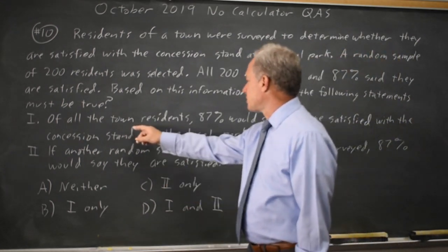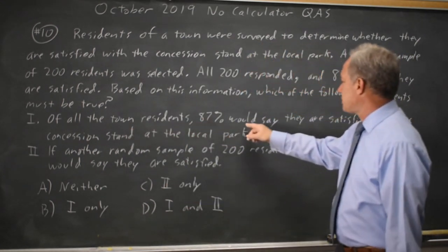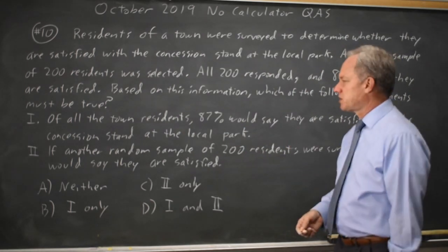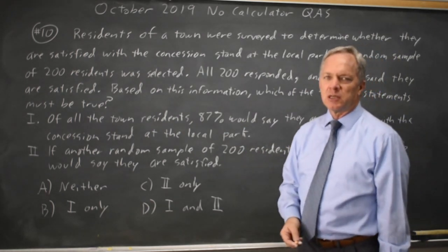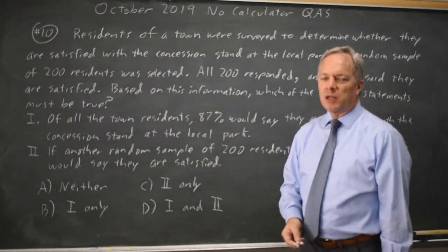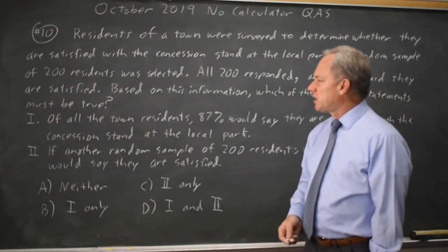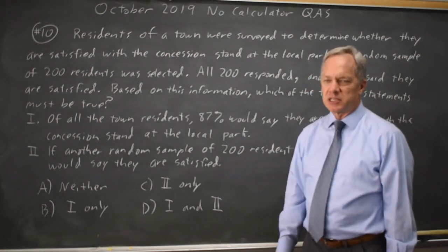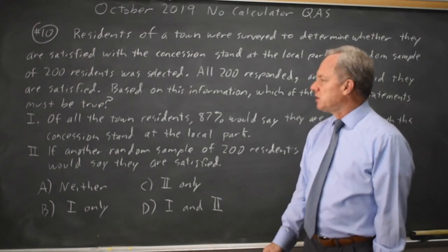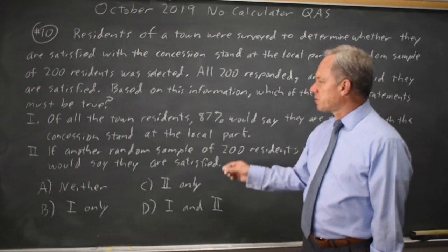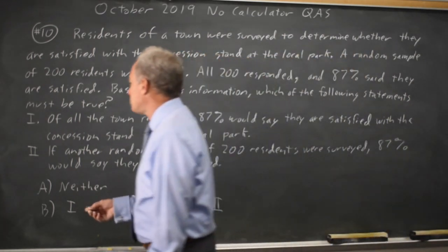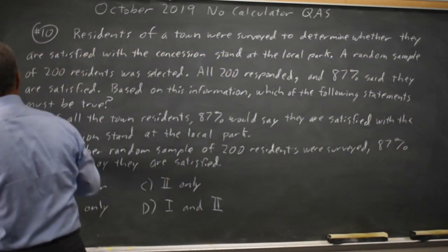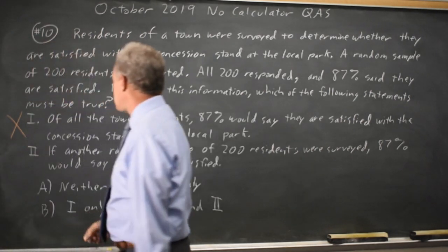Choice one: of all town residents, 87% would say they are satisfied with the concession stand at the local park. It is likely that close to 87% would say they are satisfied, but it does not have to be true that exactly 87% would say they are satisfied. So choice one is not correct.